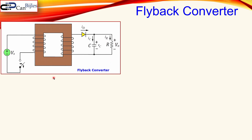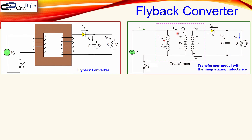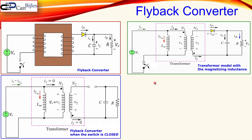For the actual calculations we use a model of the transformer, shown here in a dashed pink region. We have the input, the switch, the primary side of the transformer, and the secondary side. One important note: the dot convention shows where current is flowing in versus leaving, and V1 and V2 are flipped — not at the same polarity. We also model the transformer with the magnetizing inductance Lm, which is an important parameter used in our design.